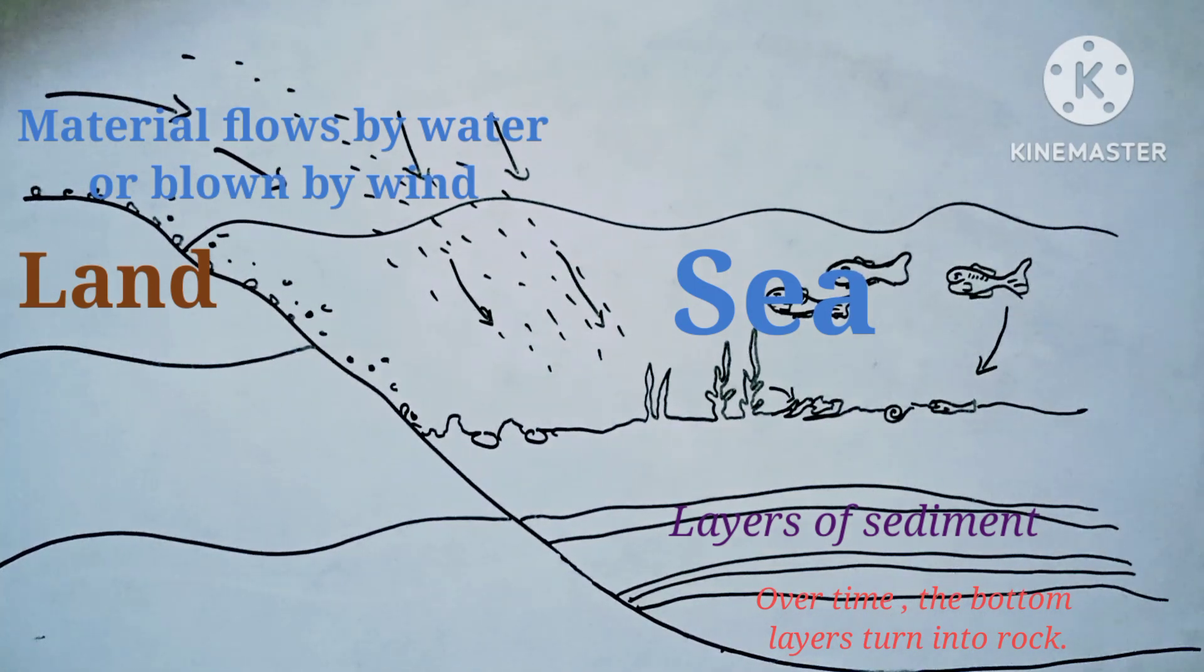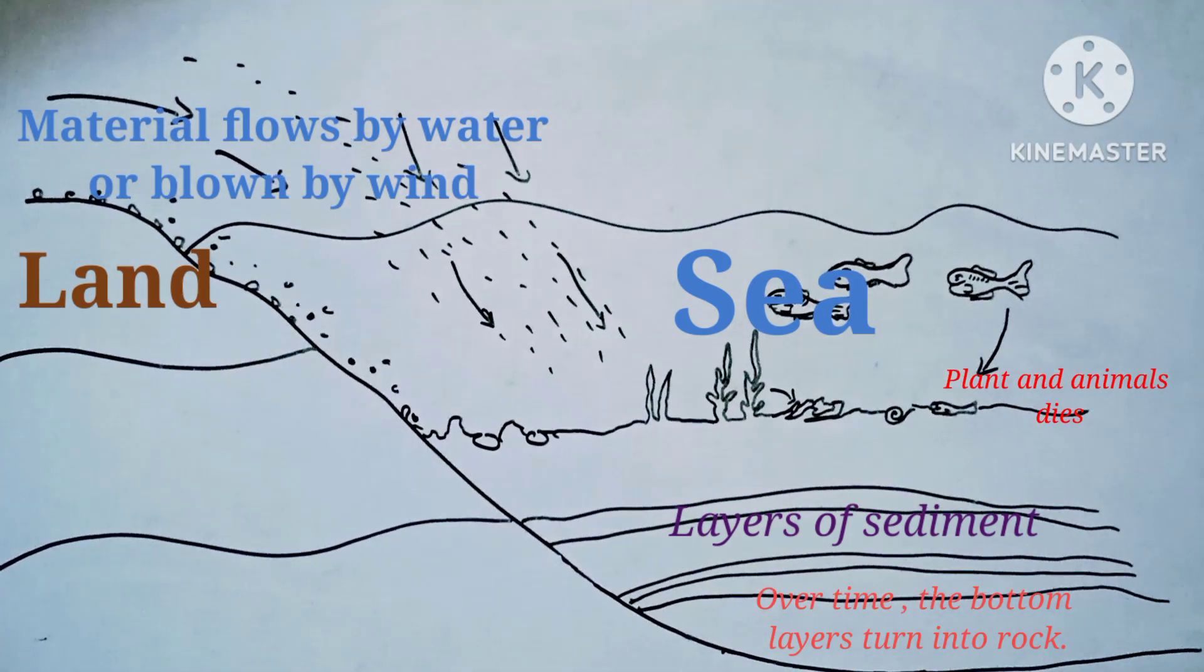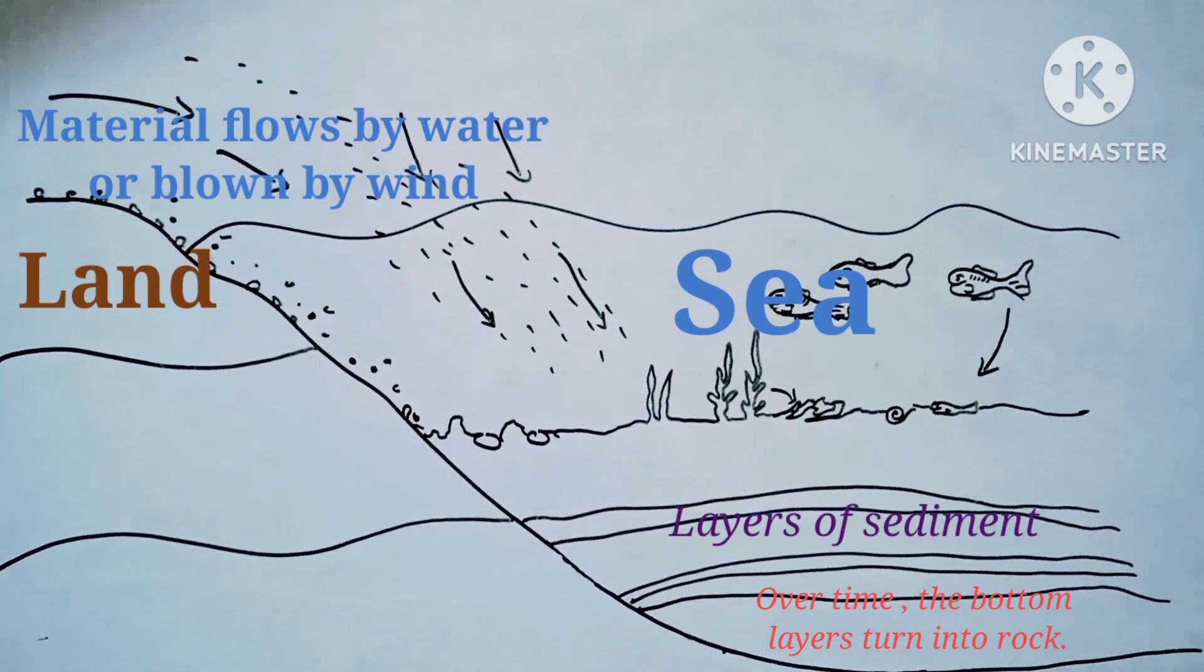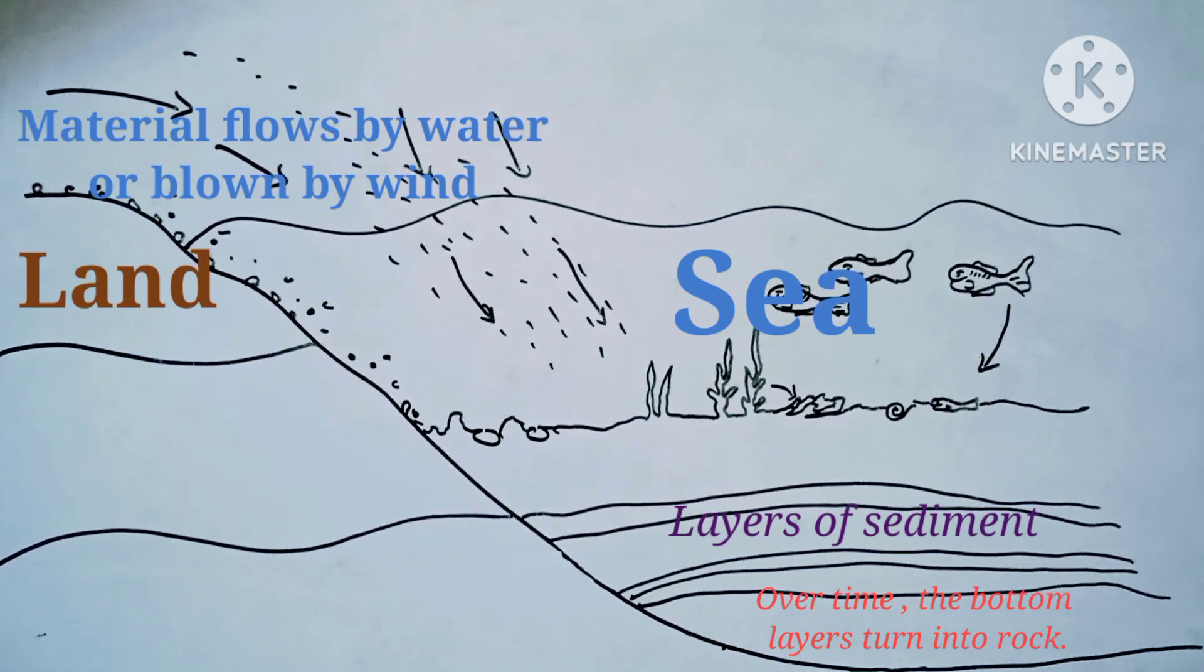Let us see the second example, that is limestone. Limestone is formed from the shells and skeletons of tiny sea creatures that get buried in the seabed and get compressed to form rocks. It is a very soft stone. This limestone is used to make cement and glass.